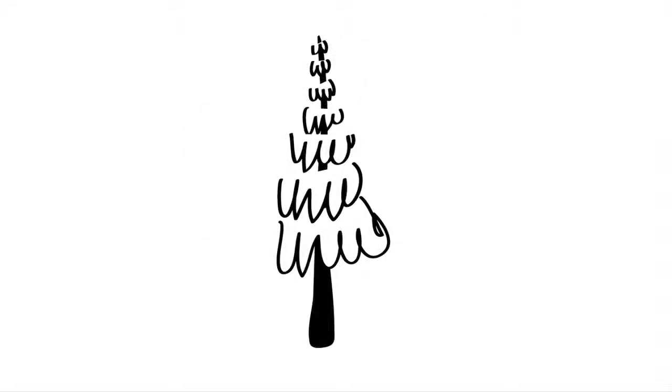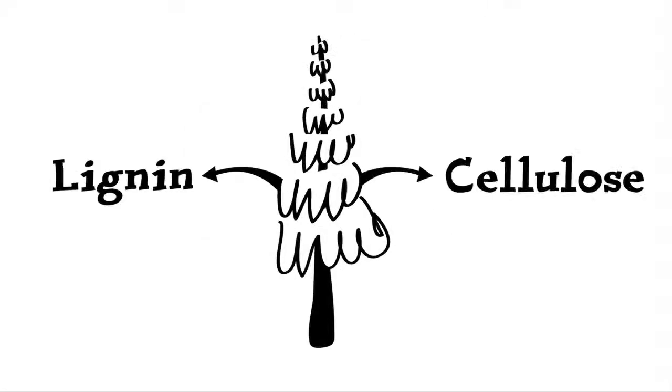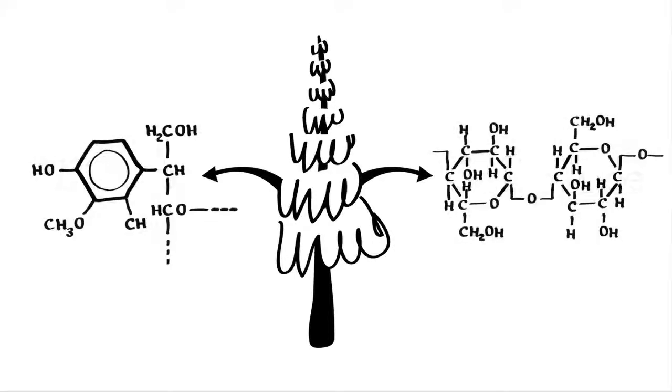Now, let's review the bleaching process. Lignin and cellulose fibers are parts of the tree, and are made up of carbon-based molecules that look like this.